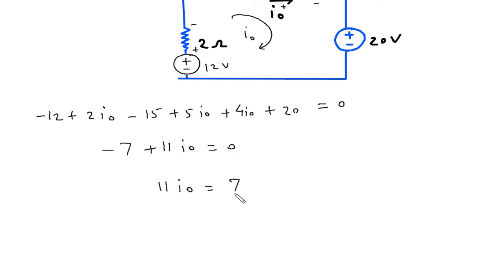So, 11 I O is equal to 7. Therefore, I O is equal to 7 by 11.